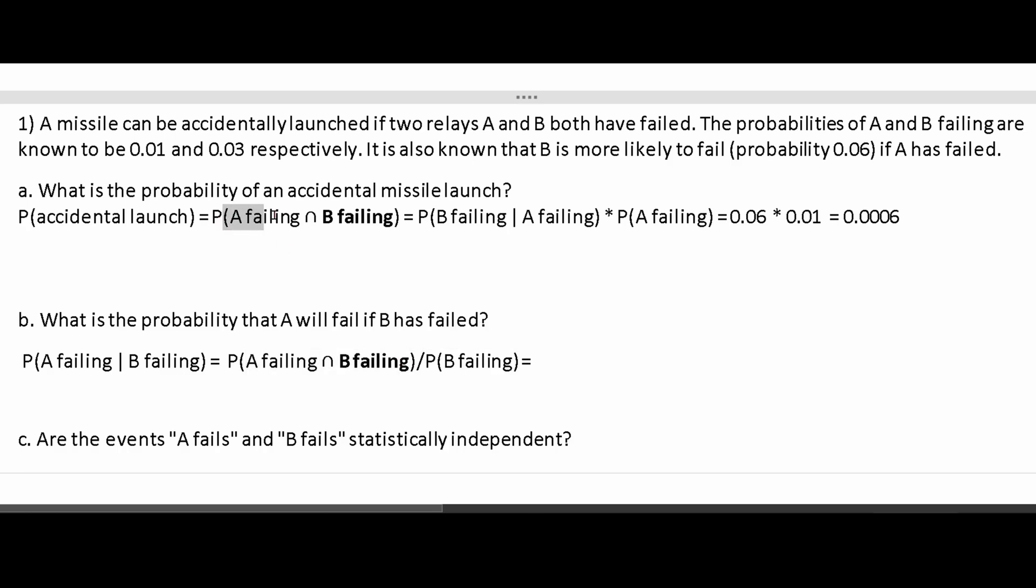This is the same outcome as what we have here. We know this is 0.006, so we place this in here. Then we divide by the probability of B failing, which is 0.03. This equals 0.02.